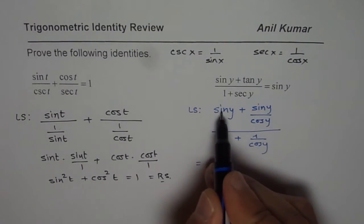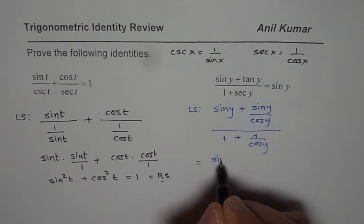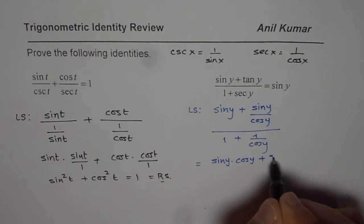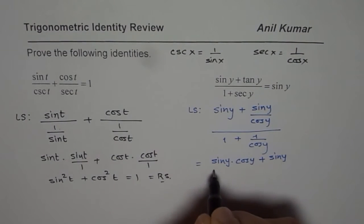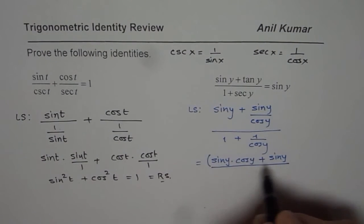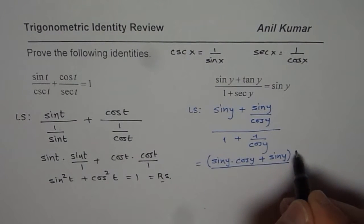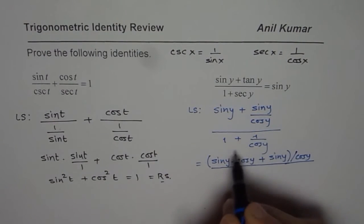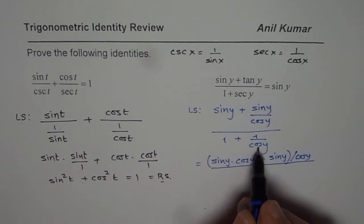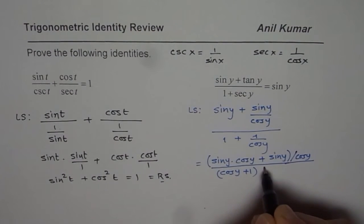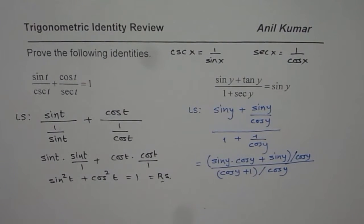We could now take common denominator of cos y in the numerator. So we'll get sine y times cos y plus sine y divided by cos y. Let me write this like this, divided by cos y. I'm just saving space. In the denominator, we'll take cos y again as denominator. So we get cos y plus 1 and that too divided by cos y.